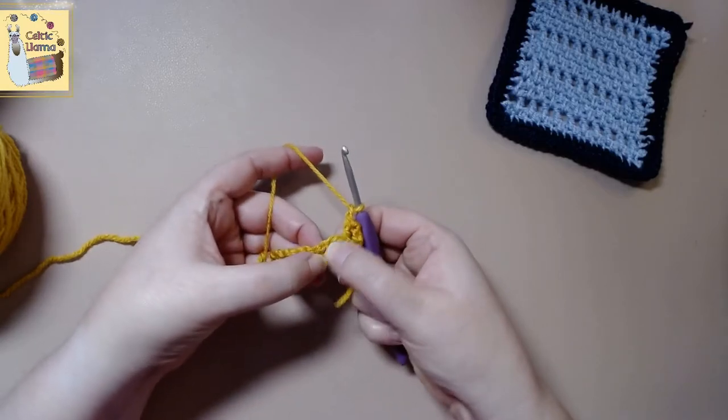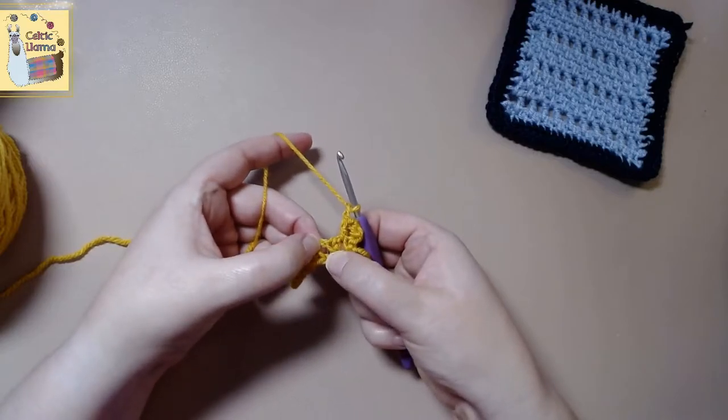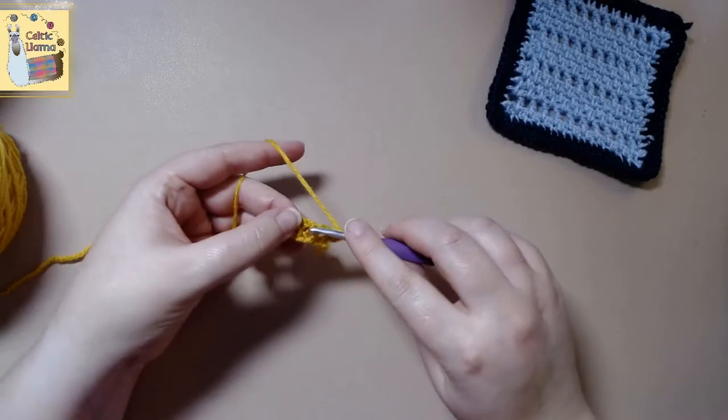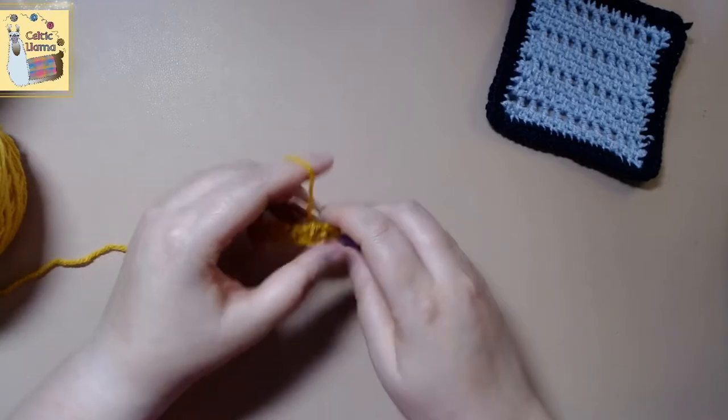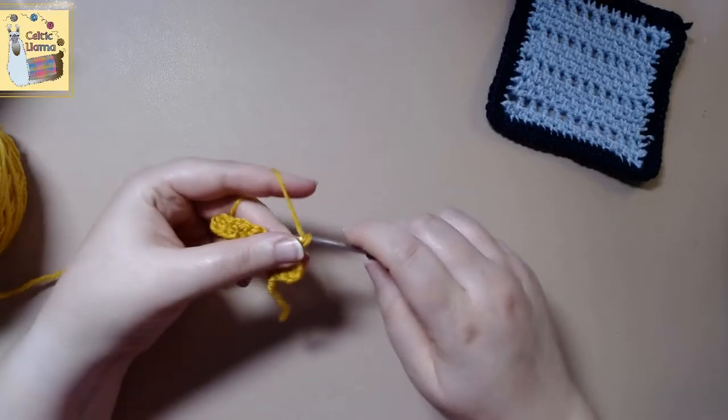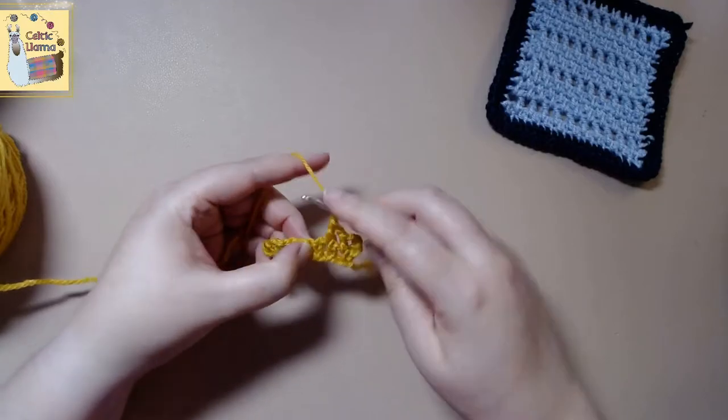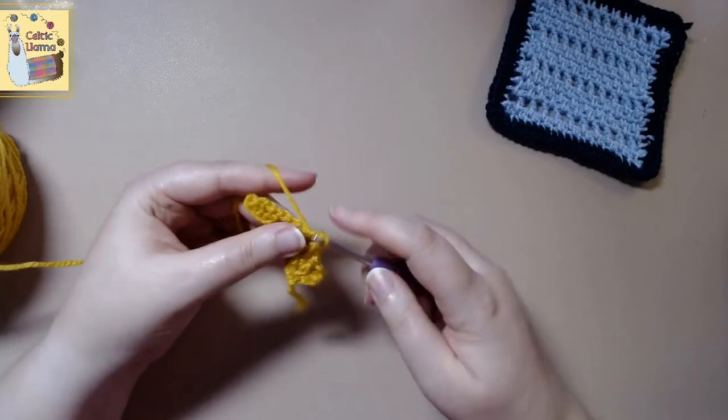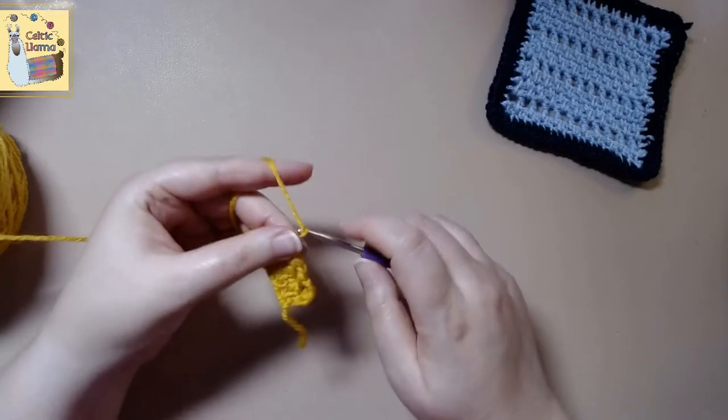And then we will chain one. So again we will double crochet in the next chain one gap down below. And chain one. And that will be our repeat. So double crochet in the chain one space below. And chain one.